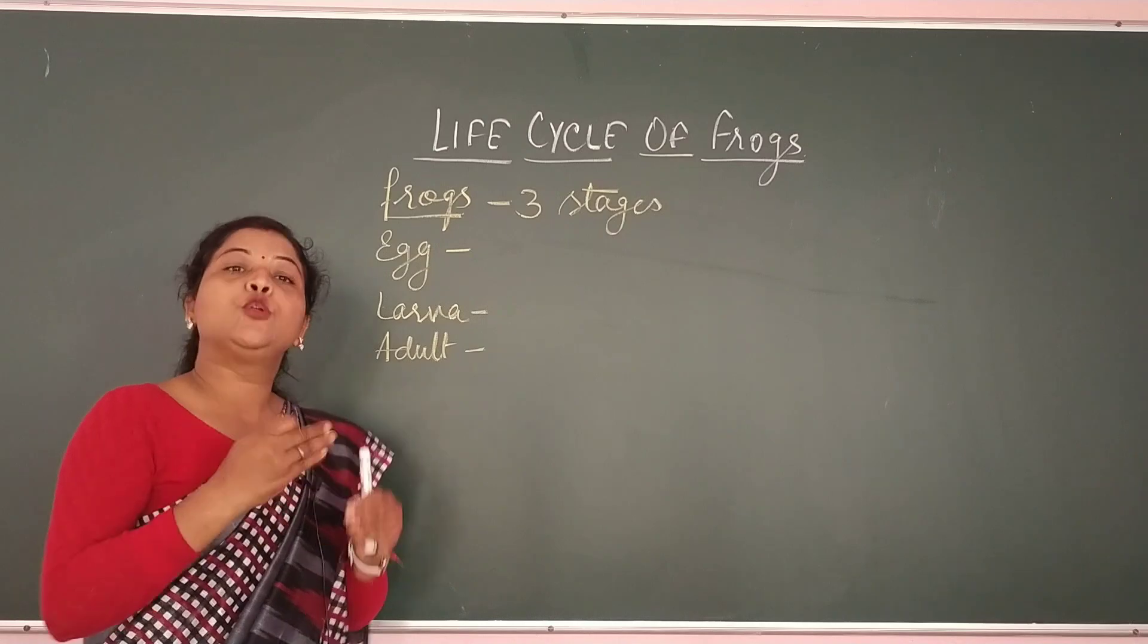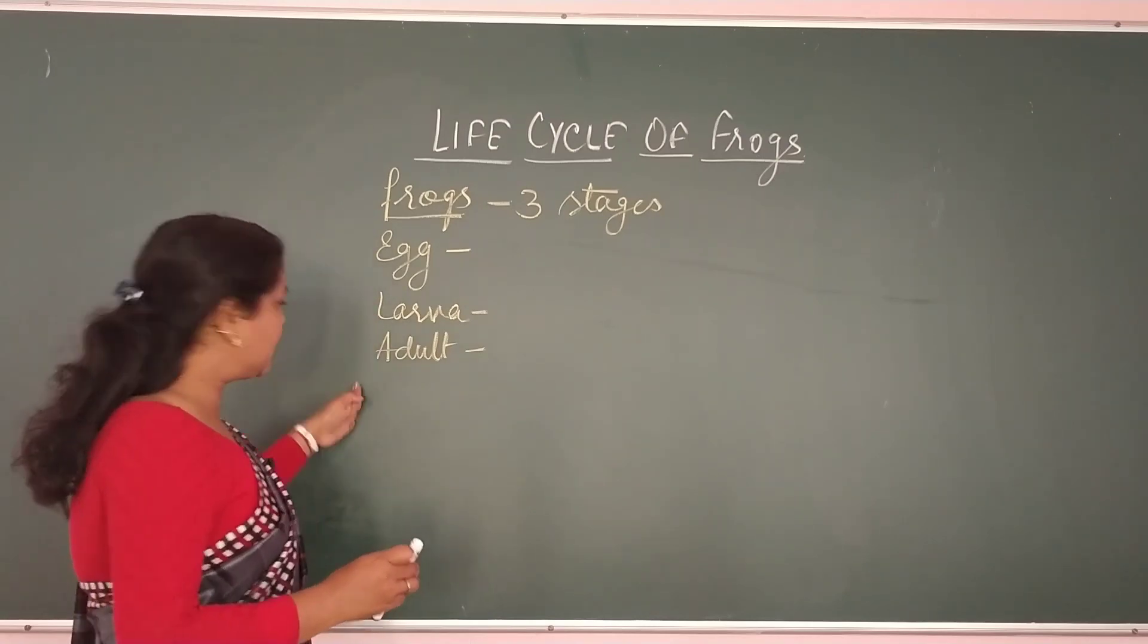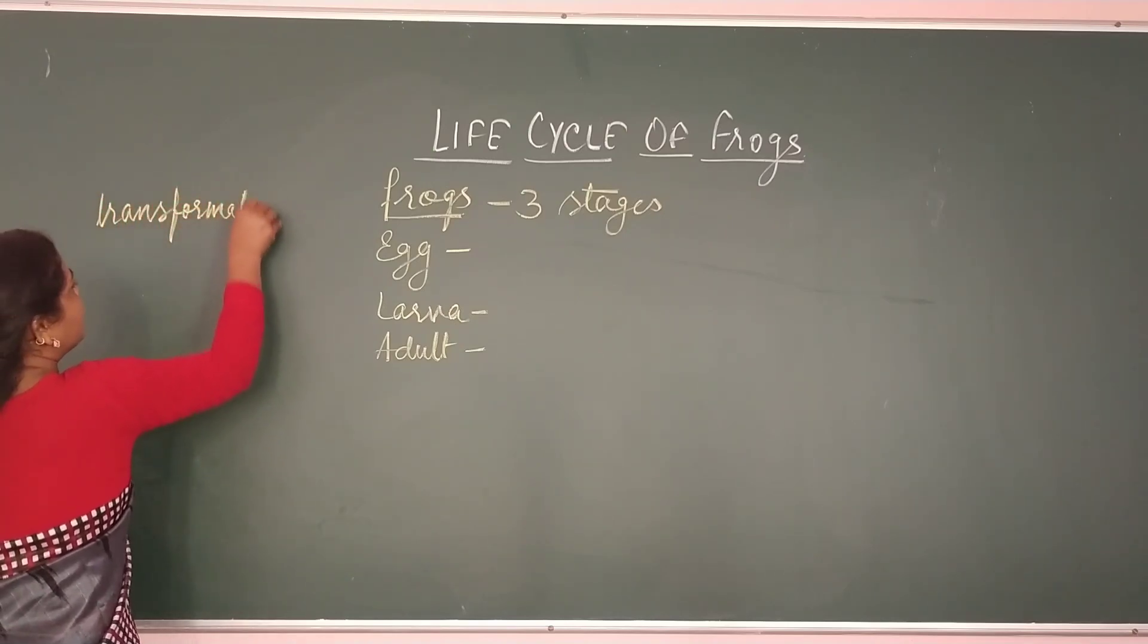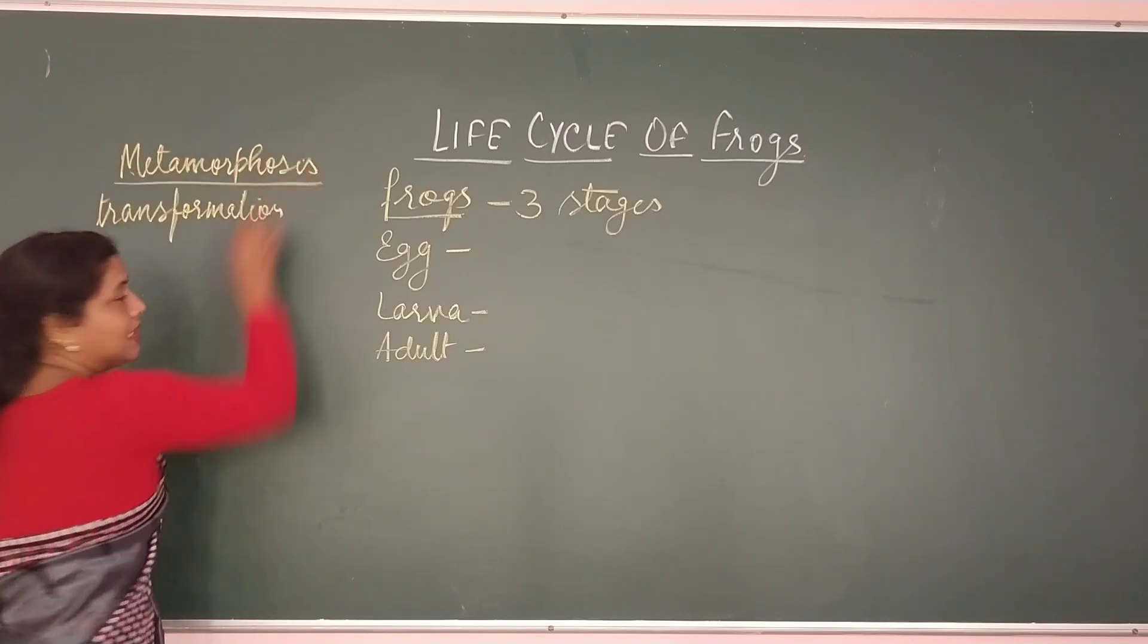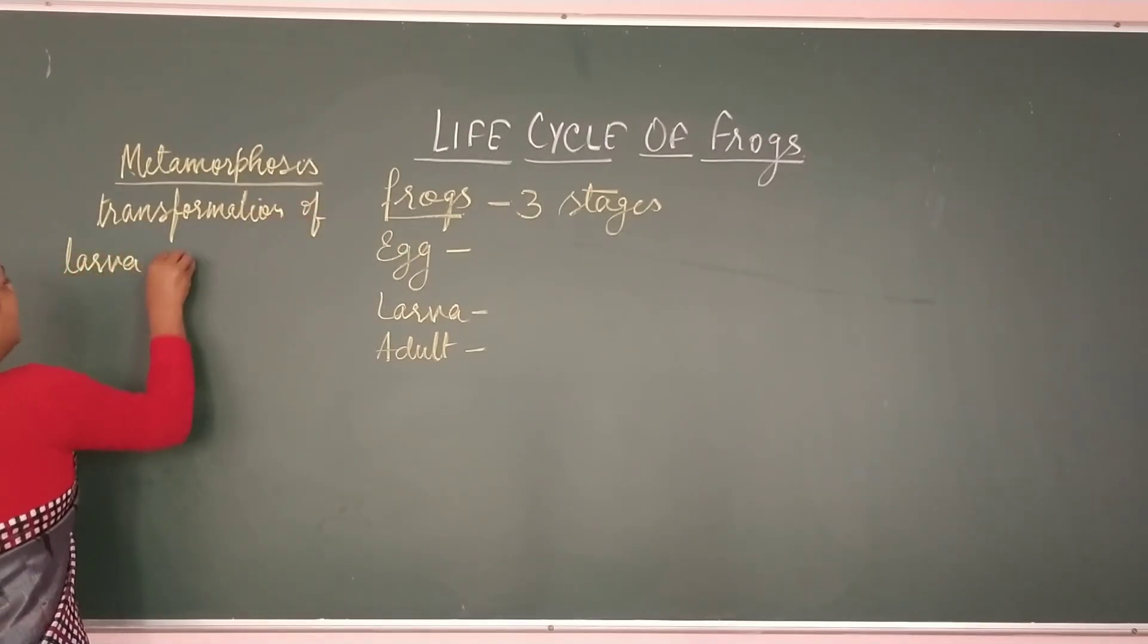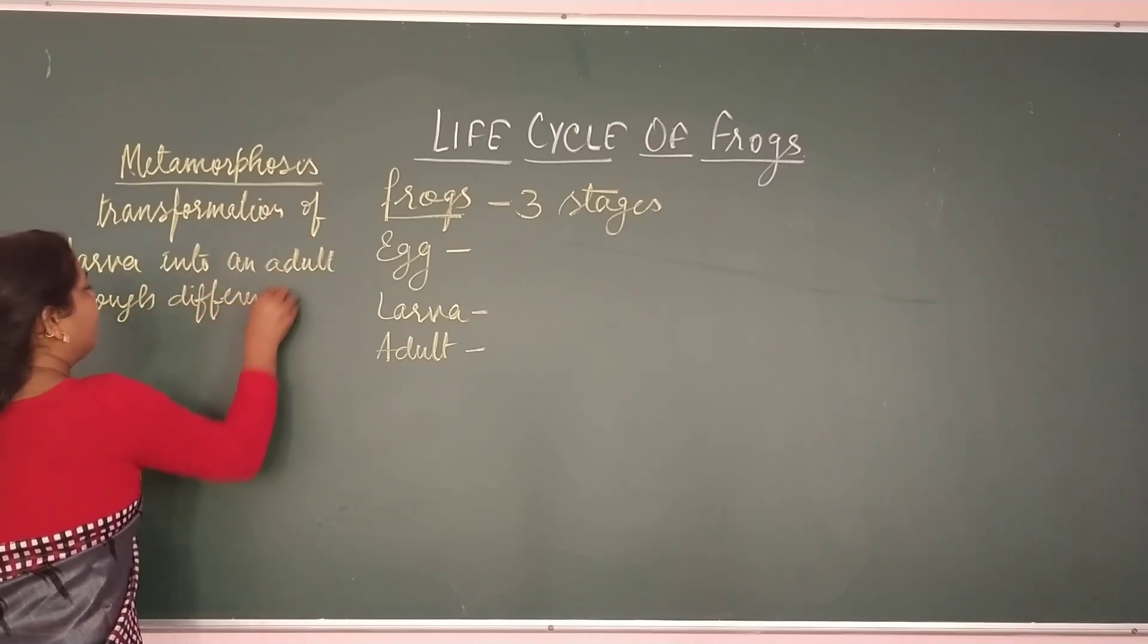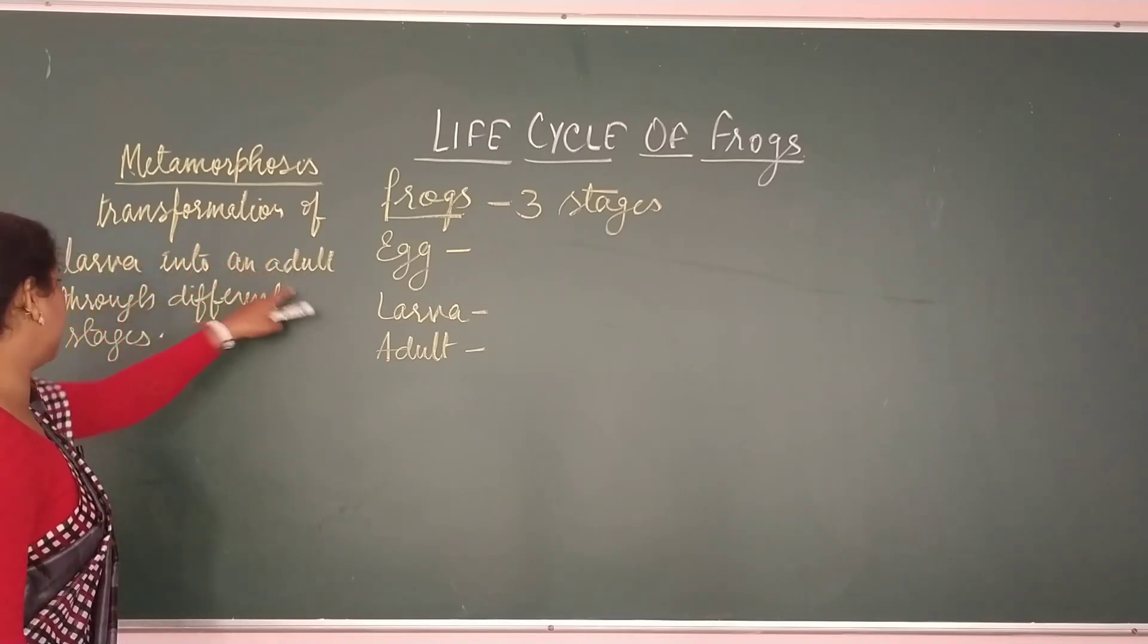So it means what? The growth of the frogs undergoes different changes. So this process is called metamorphosis or you can define metamorphosis as the transformation of larva into an adult through different stages. Metamorphosis is transformation of larva into an adult through different changes.